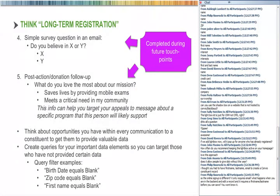Continuing the long-term registration flow: those two steps are day one. Now think further down the road — the next day, week, or month. Don't stop trying to cultivate information. Send a simple survey: 'Do you believe in X or Y?' That response may determine whether or not you send them an email next month. Also do post-action or donation follow-up, like asking 'What do you love most about our mission?' — those answers can tie into a very specific end-of-year appeal.